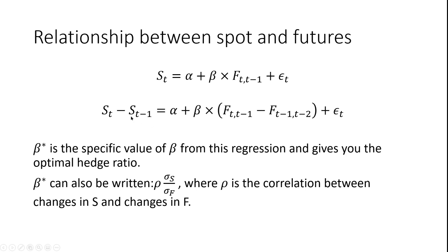To avoid that problem, we take the differences of both the spot price and the futures price. We take the one period futures price and deduct the one period futures price from the last period — we don't use the futures price with the same maturity date. By doing this, we are most probably modeling a stationary time series, so we don't have problems with non-stationarity, heteroscedasticity, or autocorrelated errors.